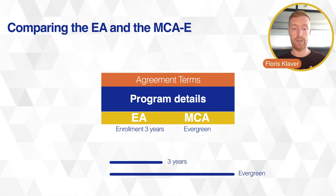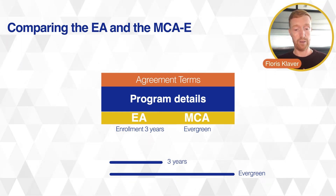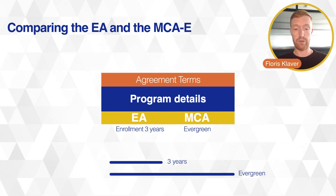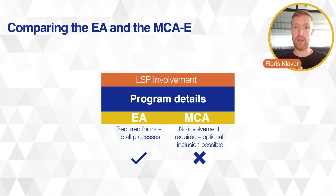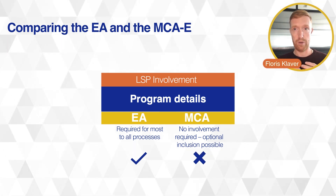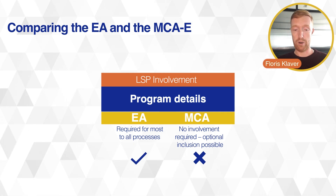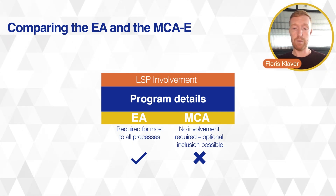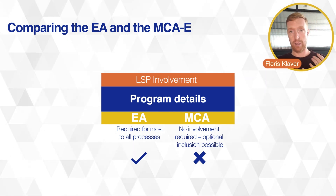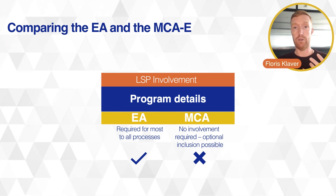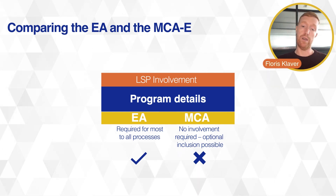One of the main changes in program details that is very interesting to the partner channel is LSP involvement. In an Enterprise Agreement you're used to having an LSP involved — they handle fulfillment of the contract and help place orders. In the MCAE an LSP is not required — it's optional. You can still use an LSP for order handling, but the MCAE is set up in such a way that you can do this yourself.